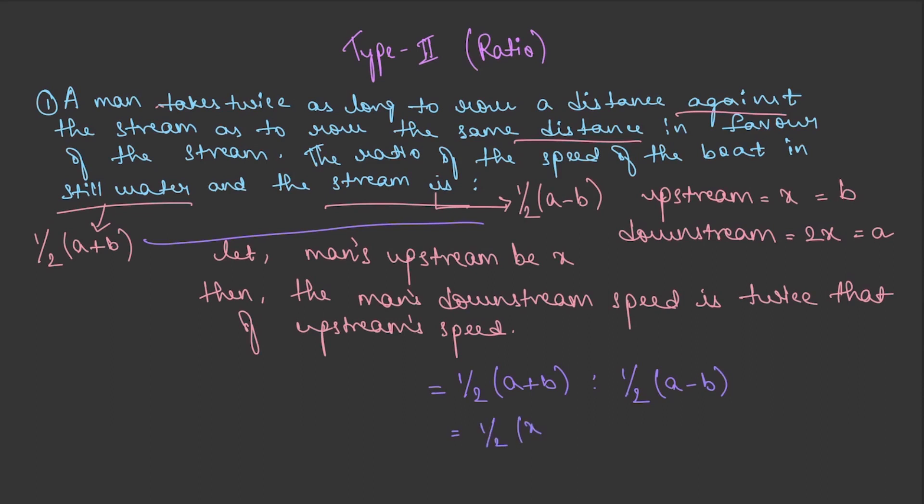So now the value for this will be 3x divided by 2 is to x divided by 2, that is 3 - we cancel this - is 3 is to 1. So ratio problems are generally asked in this type. Divide the question and read it twice for better understanding of these questions.